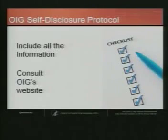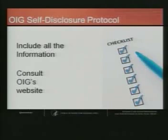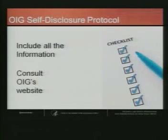Some of the most common issues that come through the protocol include many things we've talked about today: billing for services provided by an excluded person, upcoding of E&M services or DRG upcoding, duplicate billing, alteration of records that don't support the claim that was filed, and kickback and Stark law violations. The OIG's protocol is appropriate for conduct that implicates both the kickback and the Stark law, but Stark law-only conduct should go to CMS through CMS's self-disclosure process.